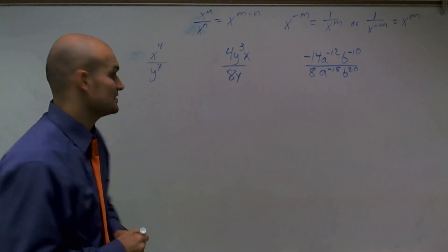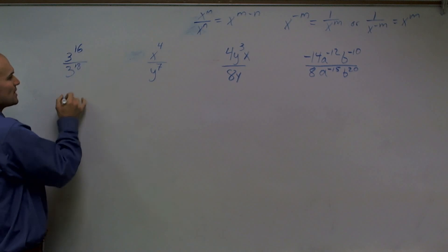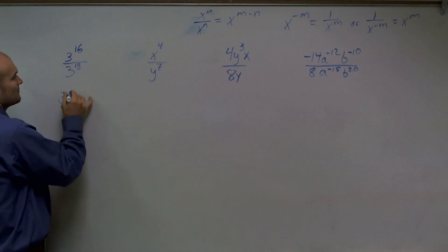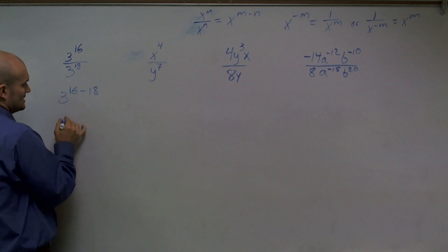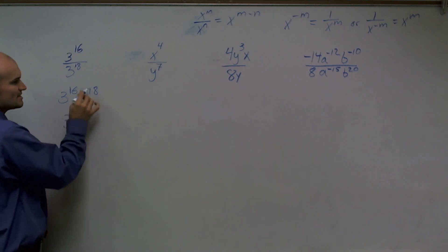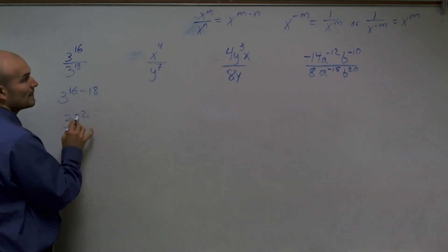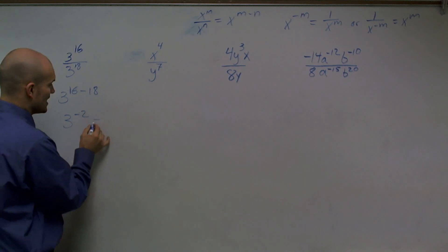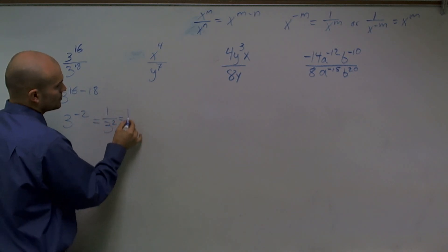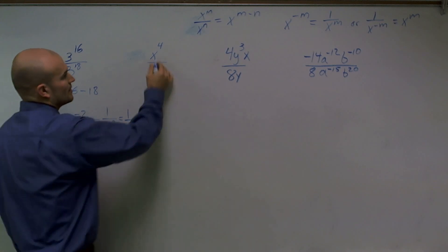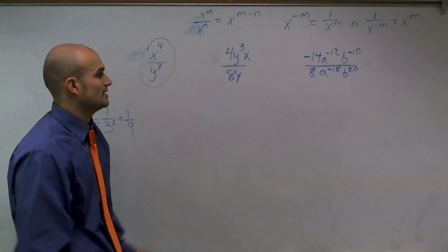Now let's go ahead and solve these. When they have the same base, you subtract the exponents. So you have 3 to the 16 minus 18, which equals 3 to the negative 2nd. Remember, I can never leave a negative exponent — I have to write this as 1 over 3 squared, which equals 1 ninth. This next problem, my bases are not the same, so that is already simplified.